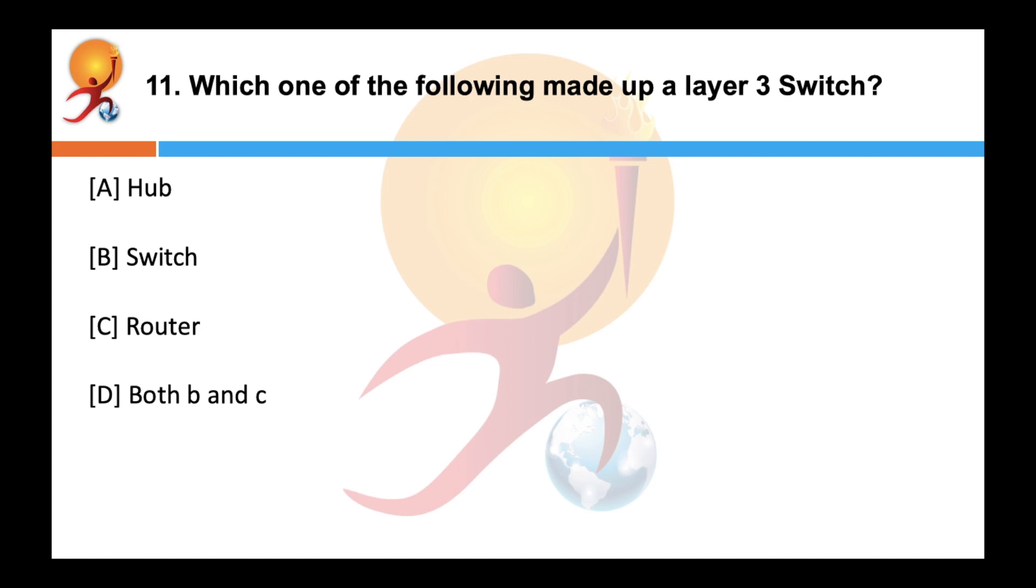Which one of the following is made up of layer 3 switch? Correct answer is both B and C. Layer 3 switch is a switch and a router built together for fast performance. A router is a networking device that forwards data packets between computer networks.